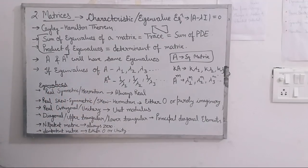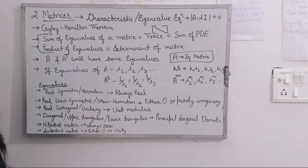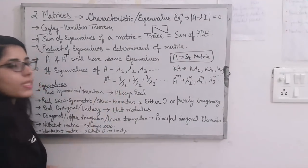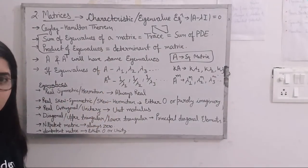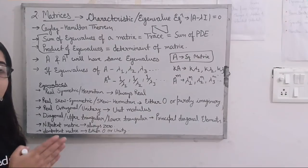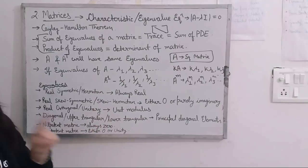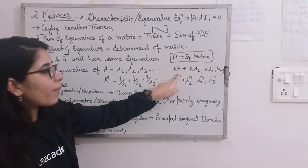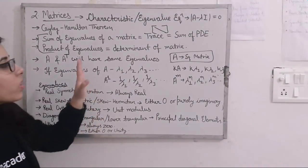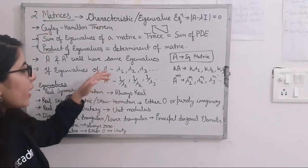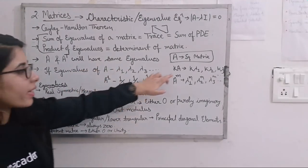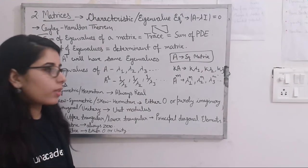As you change the form of the matrix, the eigenvalues change accordingly. If matrix A has eigenvalues lambda 1, lambda 2, lambda 3, and now you need to find the eigenvalues of A inverse — since A inverse means one upon A — the eigenvalues of A inverse will be one upon lambda 1, one upon lambda 2, one upon lambda 3.